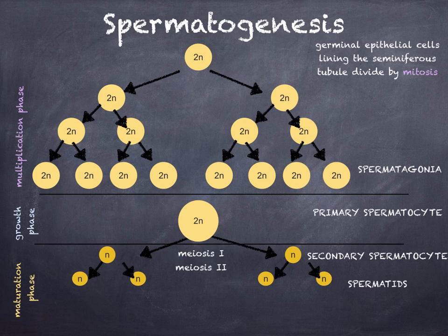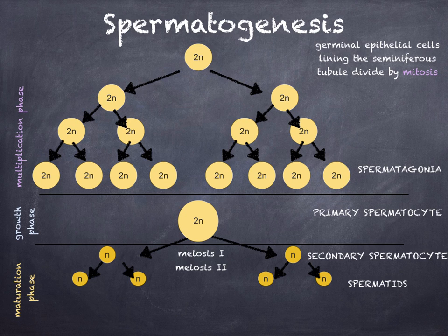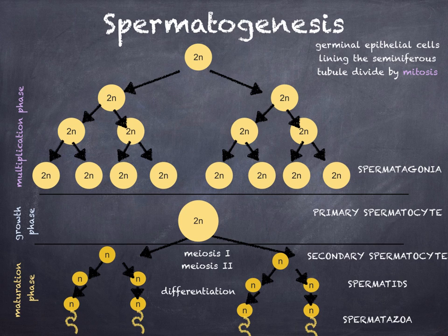The secondary spermatocyte undergoes meiosis 2 to form spermatids. Notice how the number has changed from 2N at the primary spermatocyte to N at the secondary spermatocyte, and in total you've got 4 haploid spermatids. These spermatids enter the lumen of the seminiferous tubule where they mature by spermatogenesis into spermatozoa. They are nourished by the Sertoli cells, which also provide support.